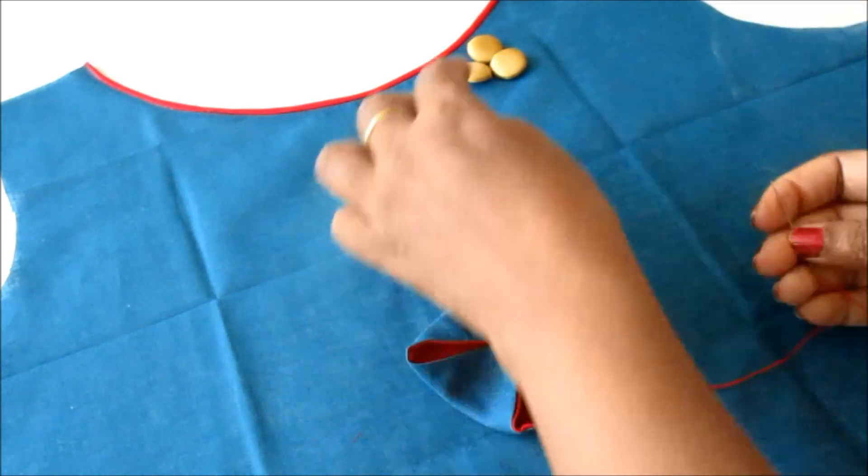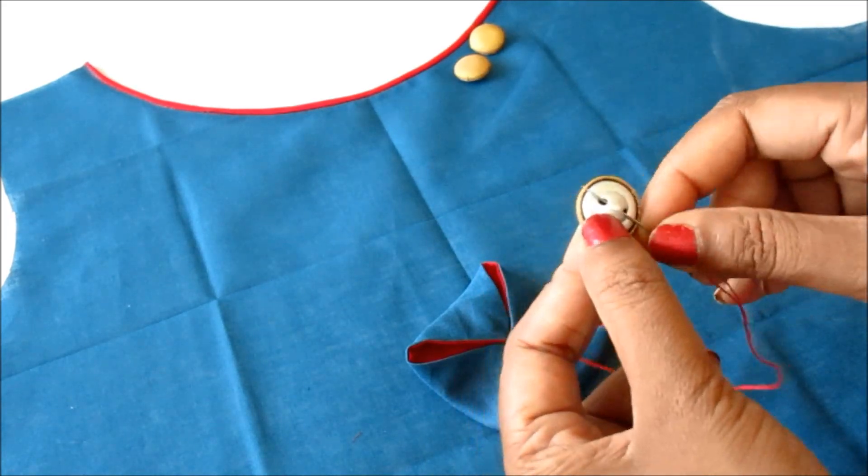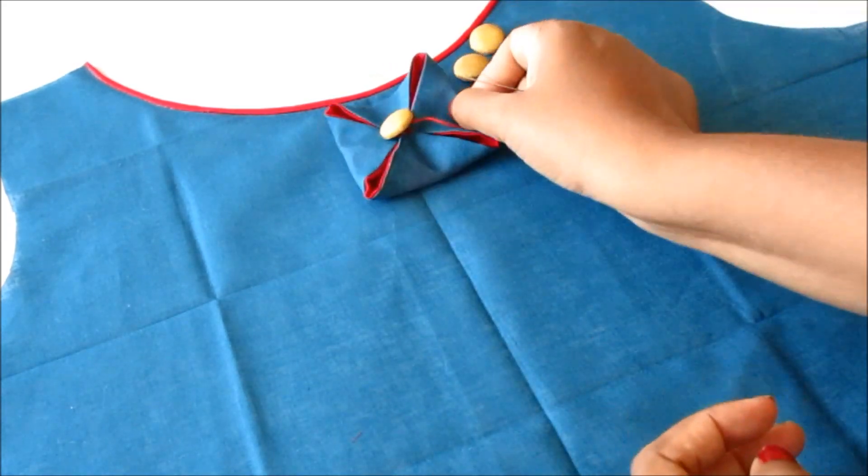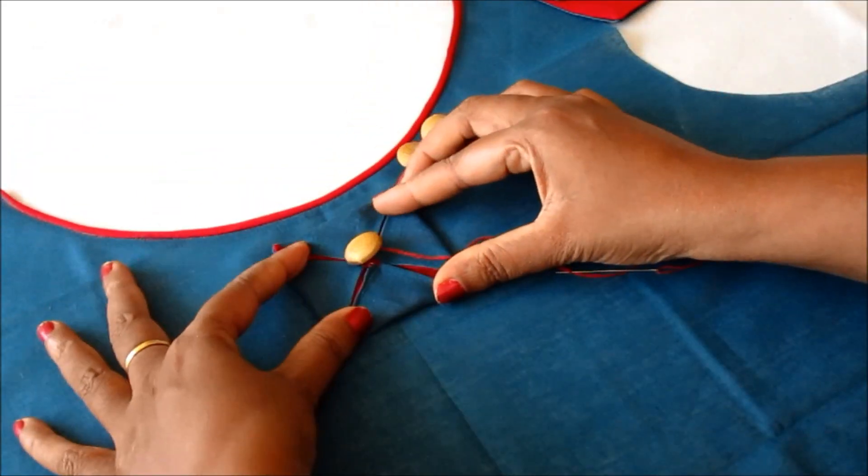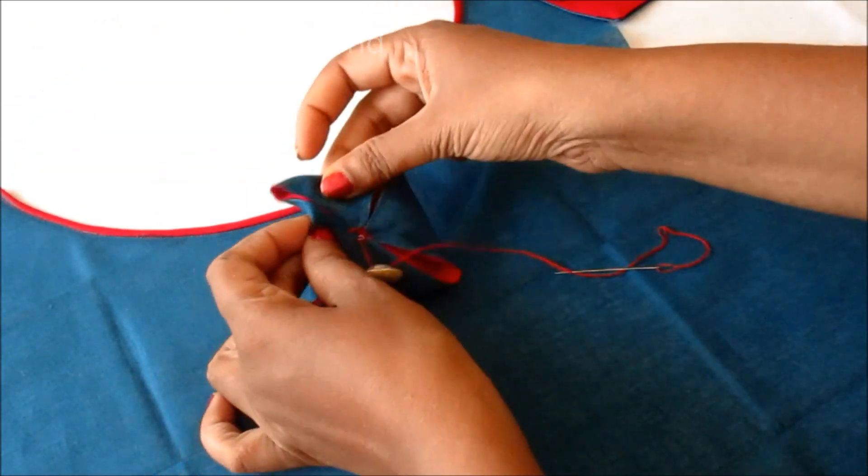Now in the center I'll stitch this fabric button. Place it in the center front and secure with the tight knot, joining this patch.